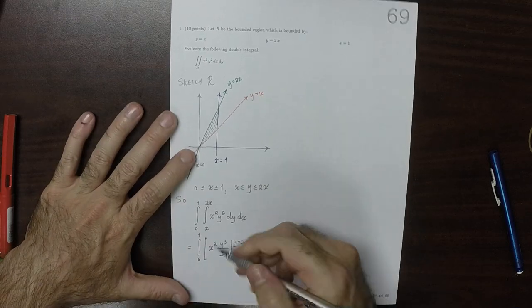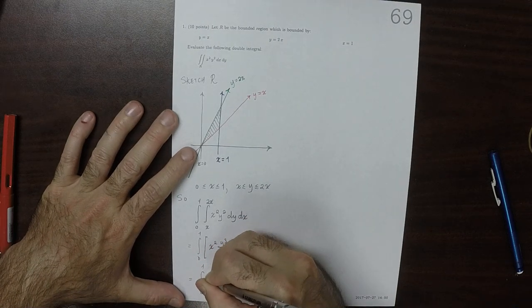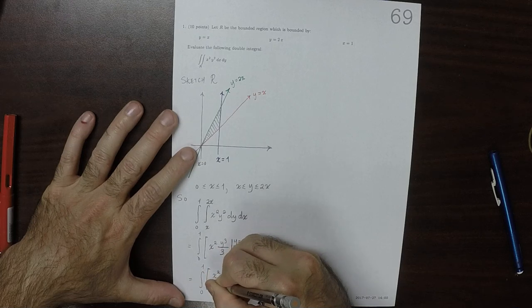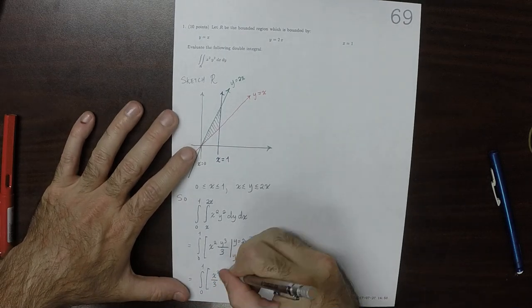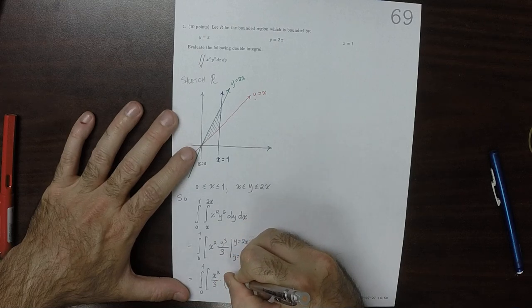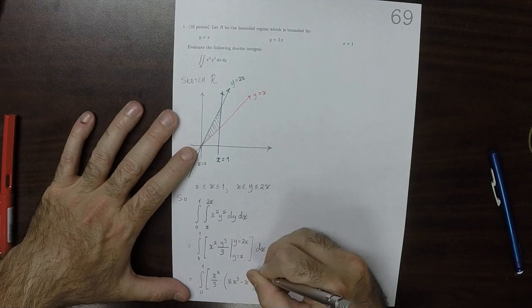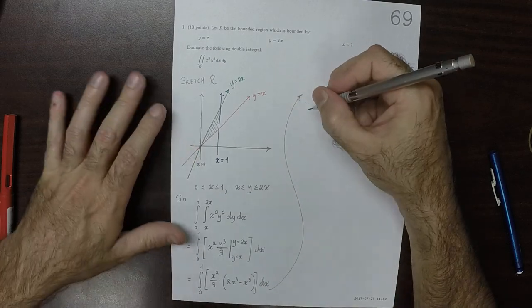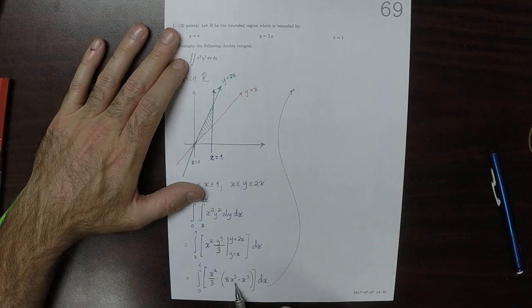So the X squared over 3 is constant, and we're just plugging in the cube. So 2X all cubed is 8X cubed, and then X all cubed. So that's 7X cubed.